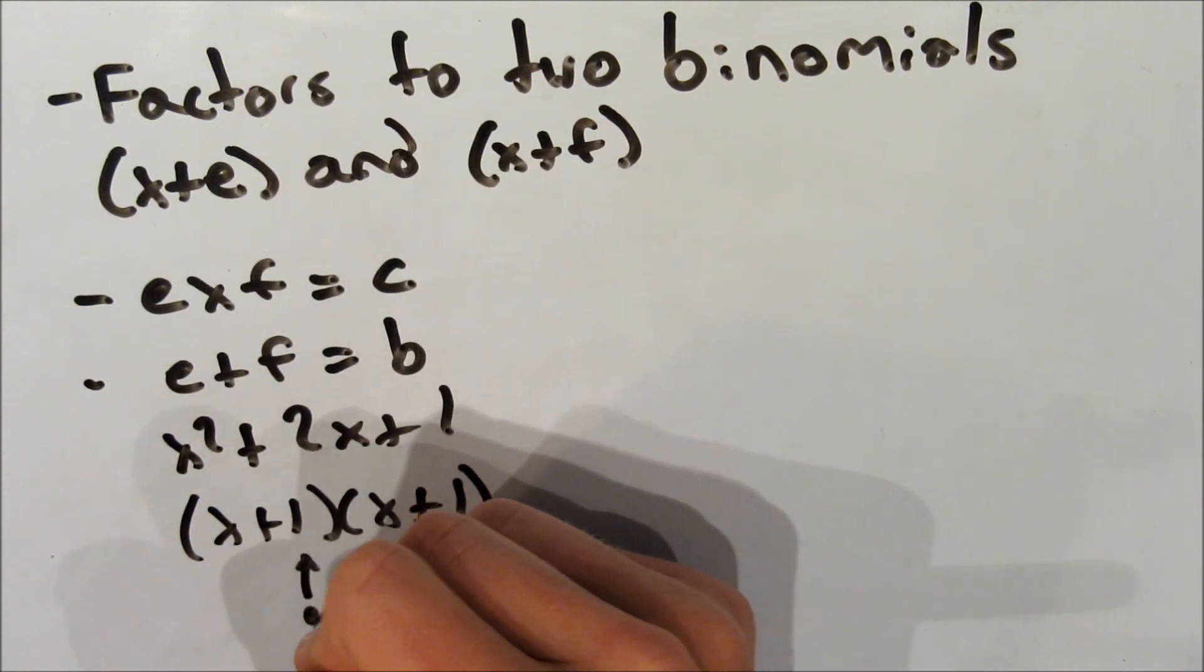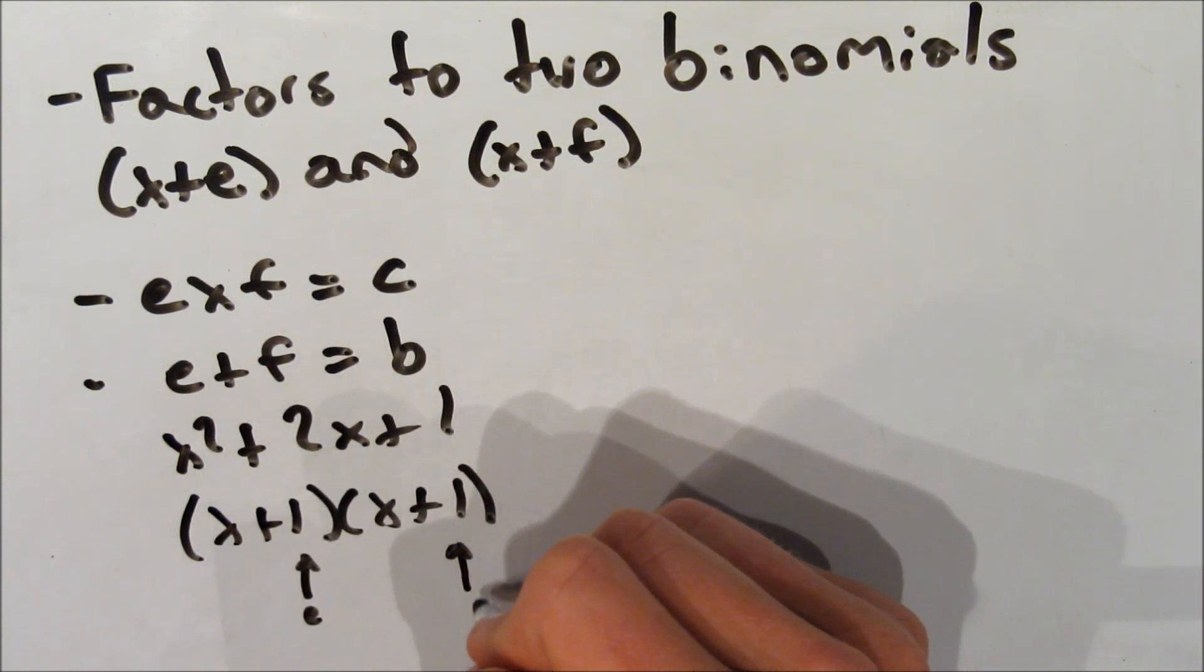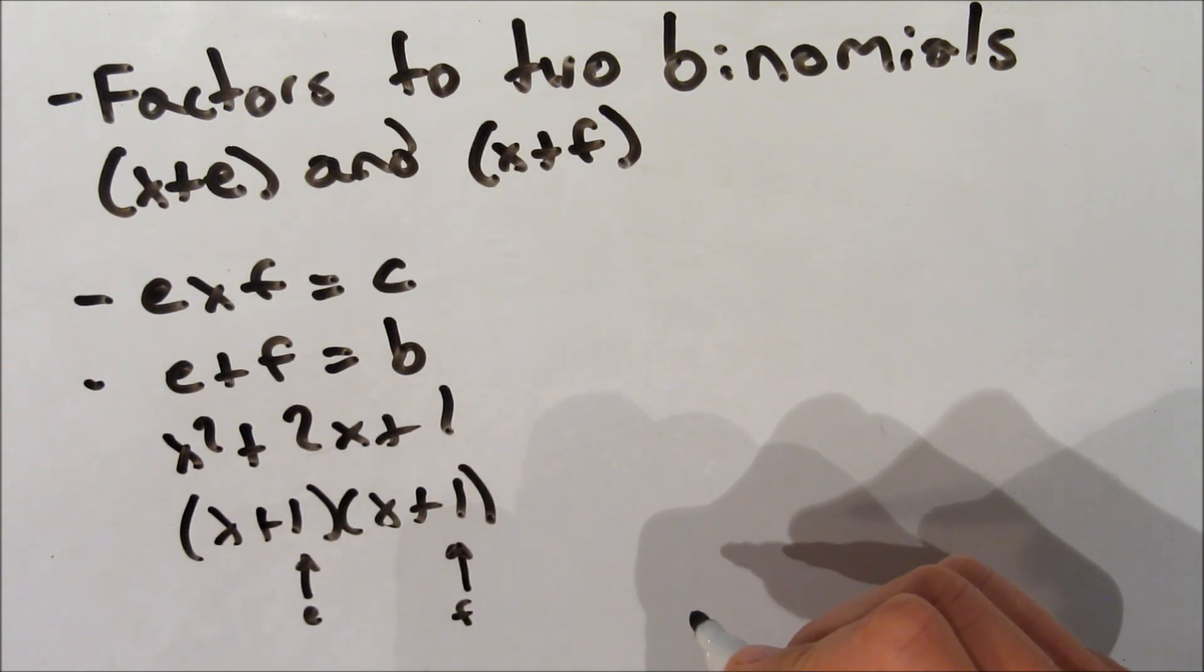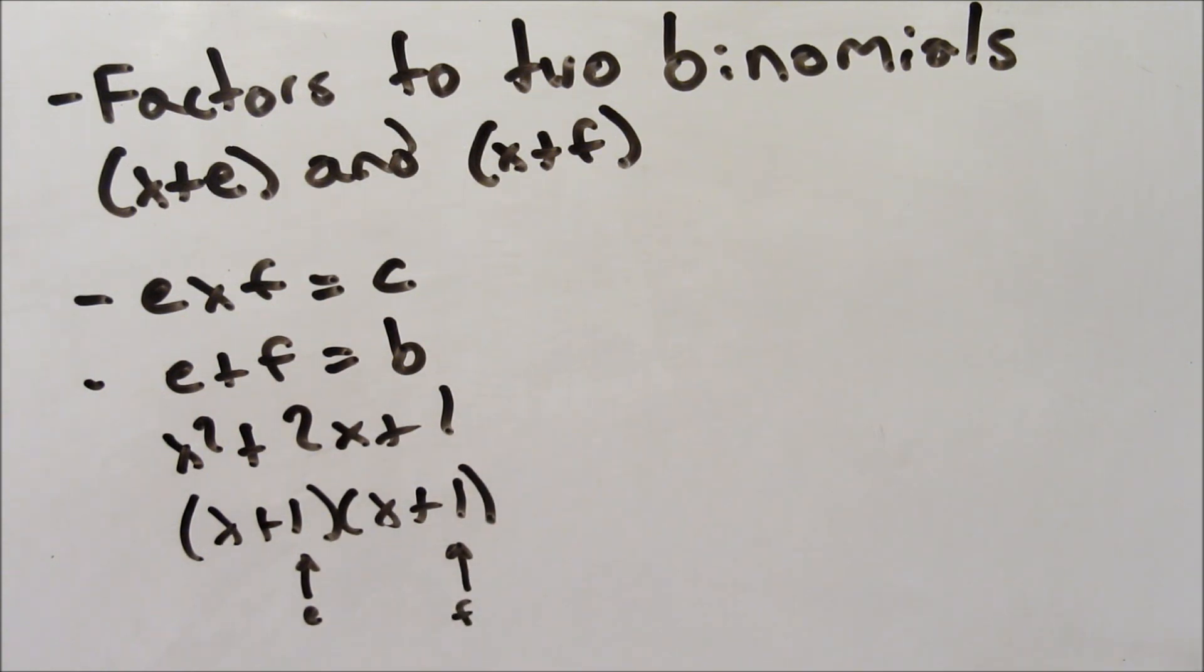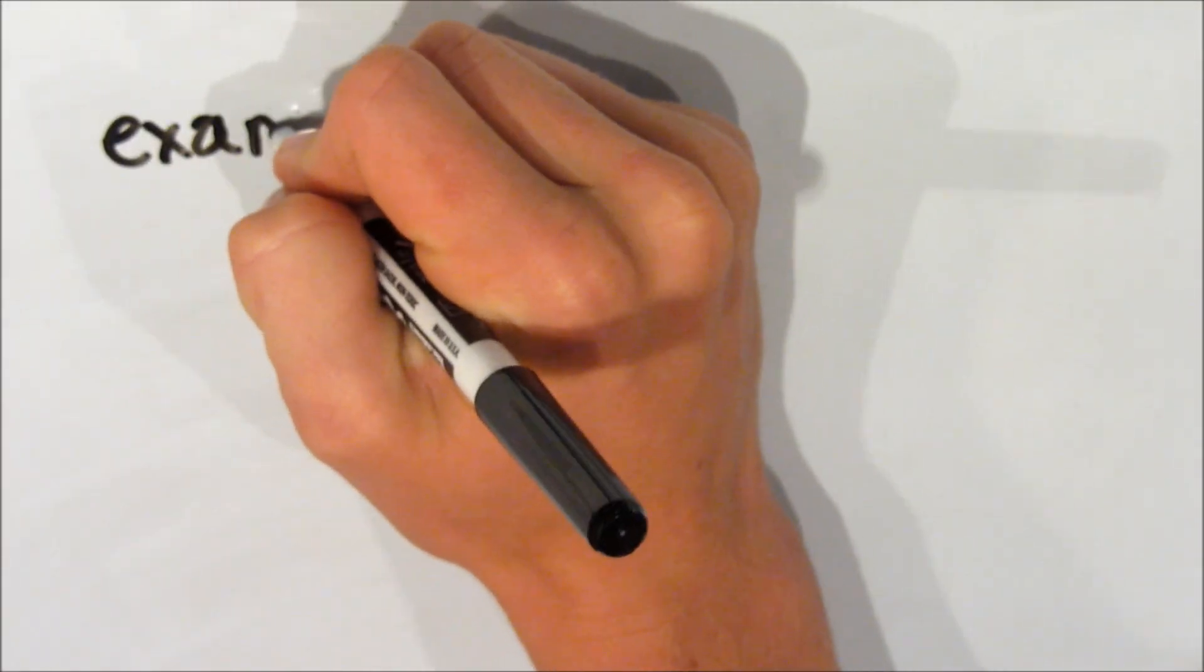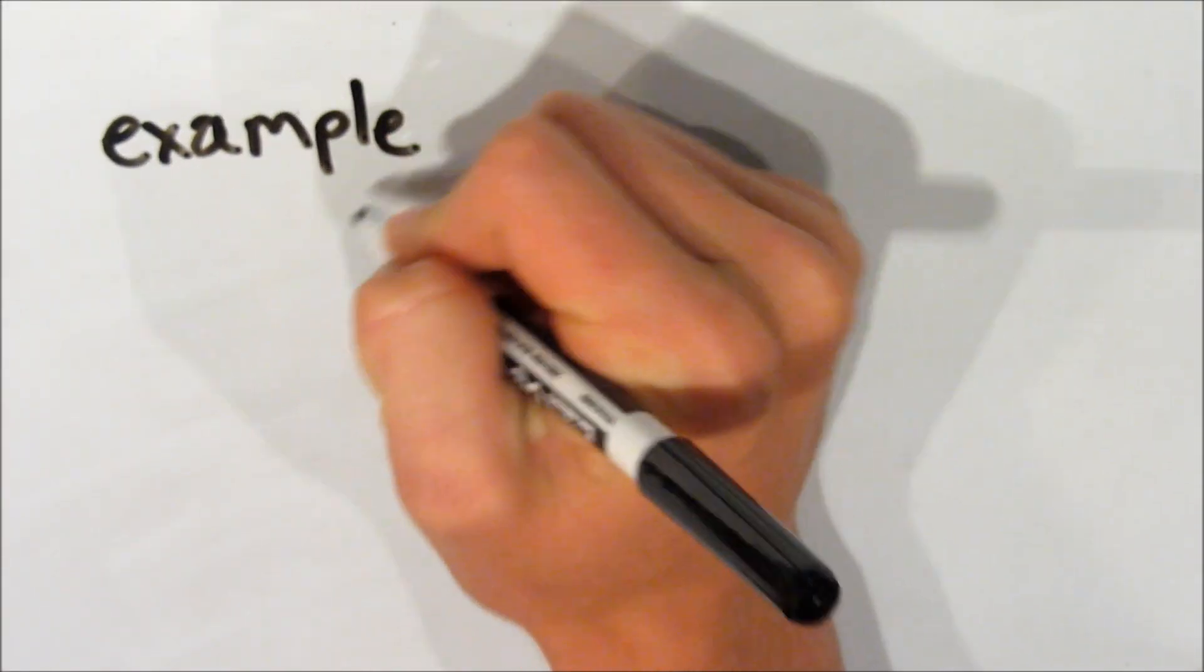And we can see again that the first one is our e, x plus e, and our second one is f, x plus f. And we can see how they can multiply and add to give us the various variables in our base function.